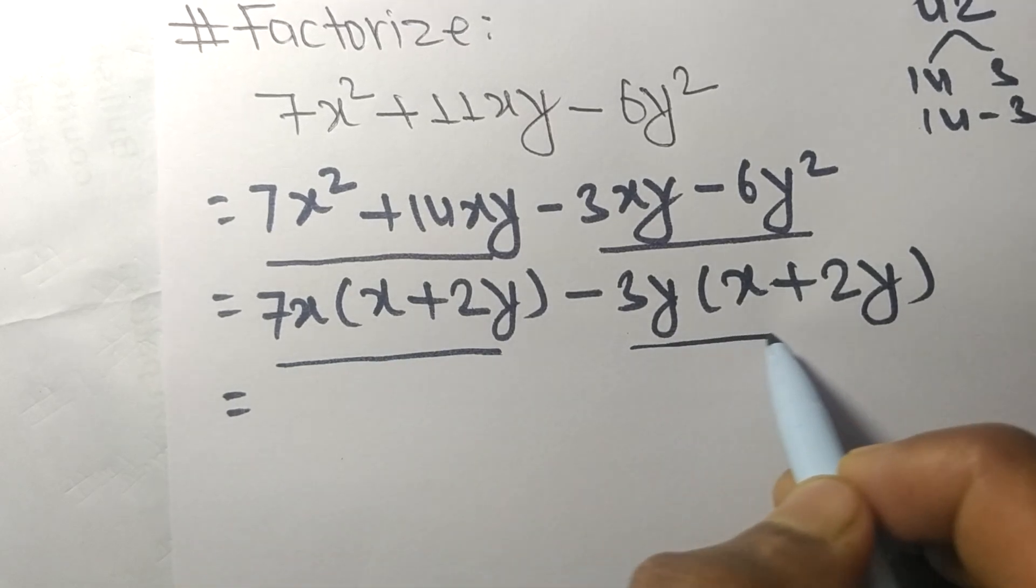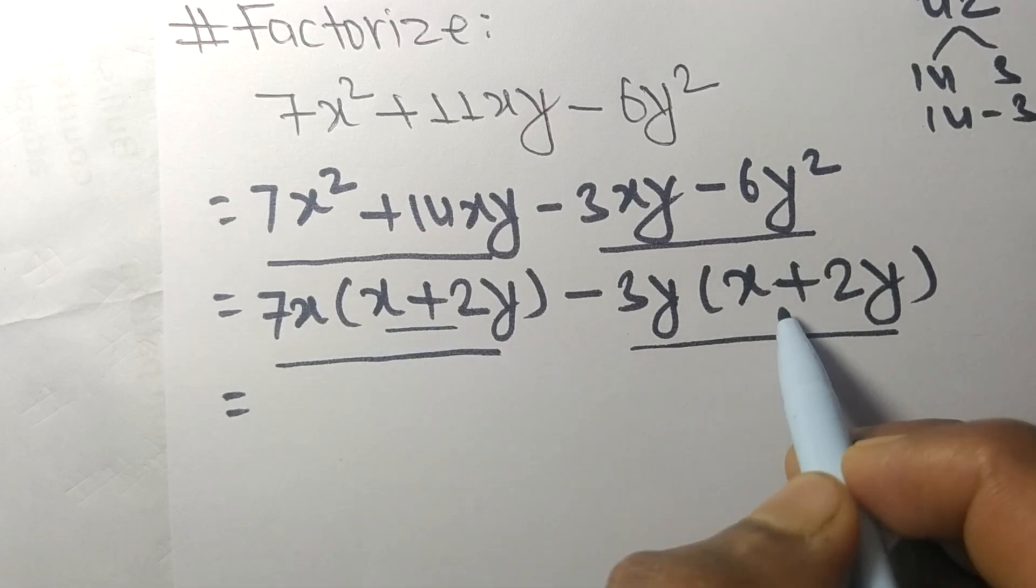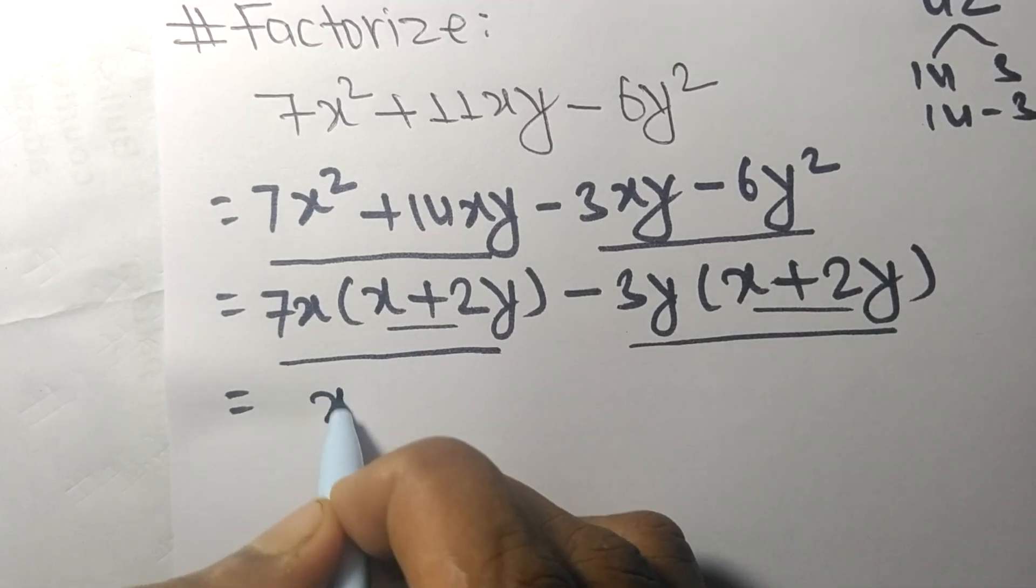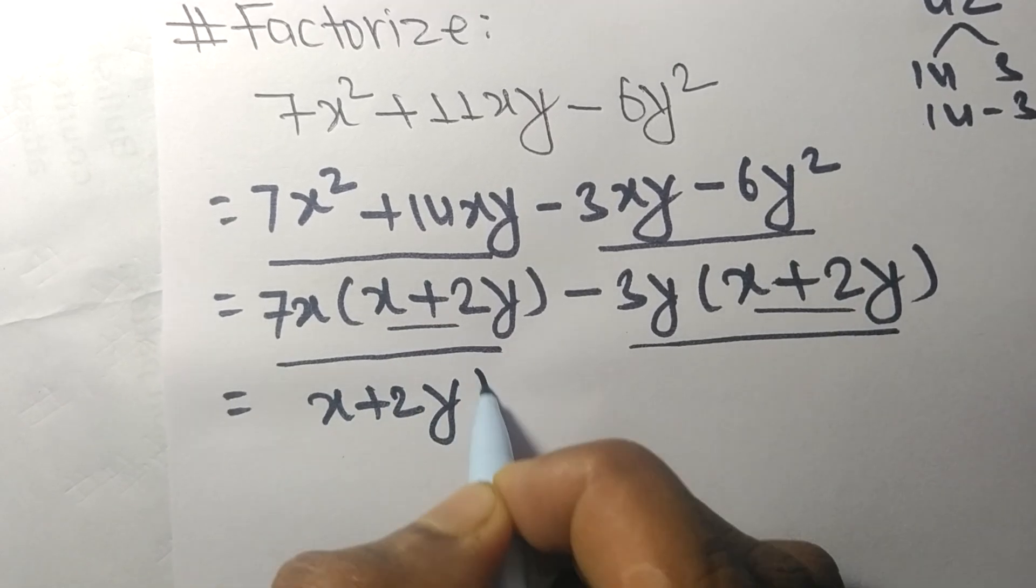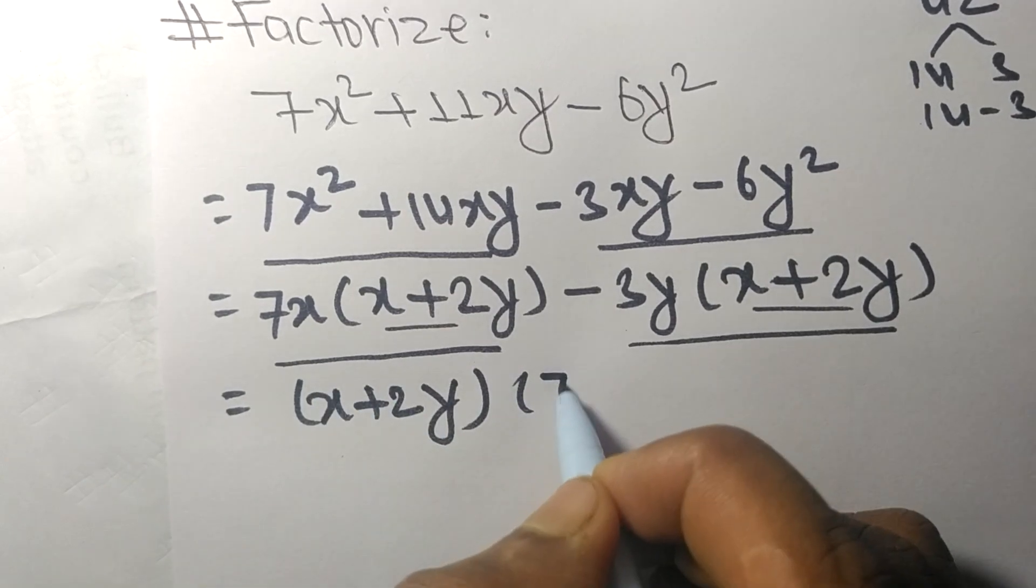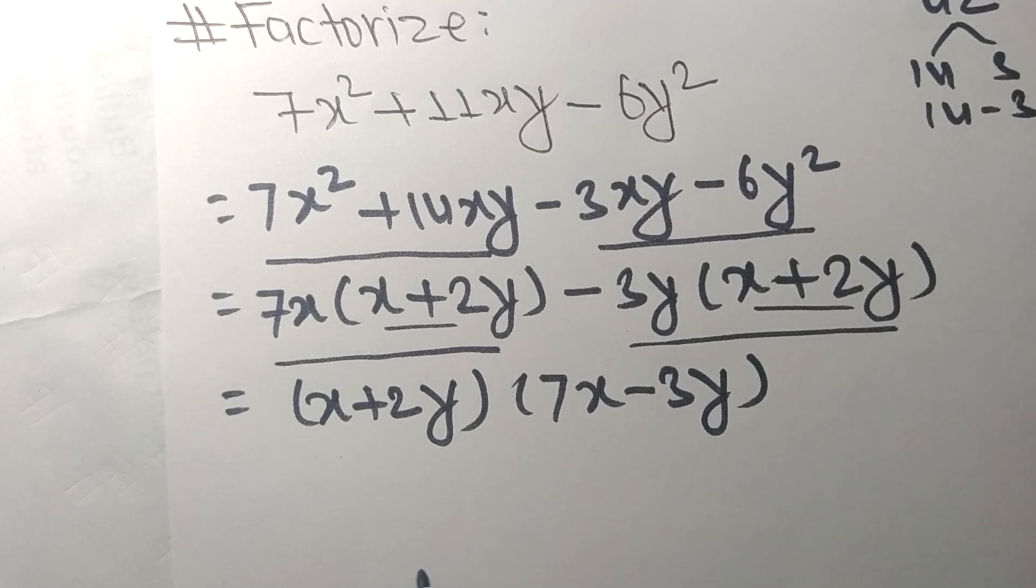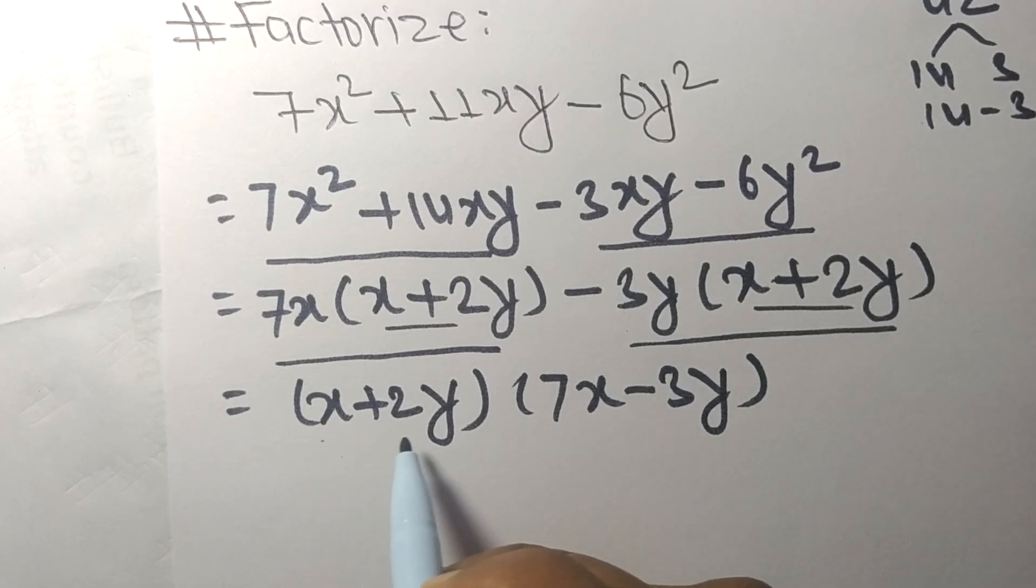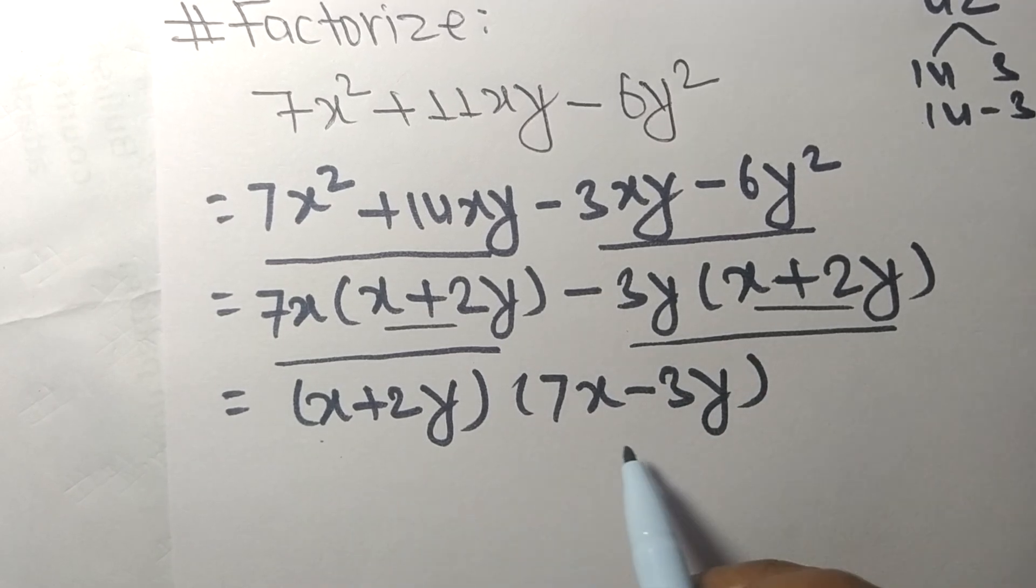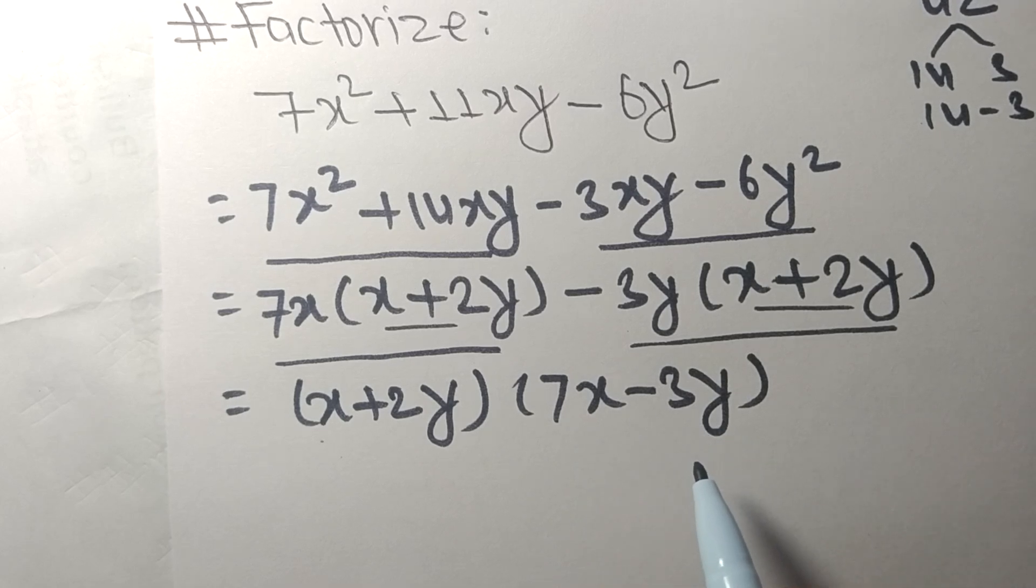Both contain x + 2y, so x + 2y is the common factor, and the remaining is 7x - 3y. So (x + 2y) and (7x - 3y) are the required factors.